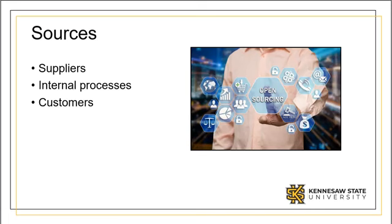Metrics can come from several sources. In general, these sources can be described as suppliers, internal processes, and customers. Metrics tied to these sources include quality, cycle time, cost, value, and labor.